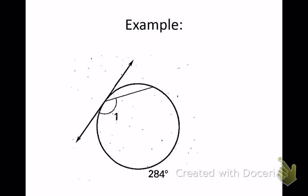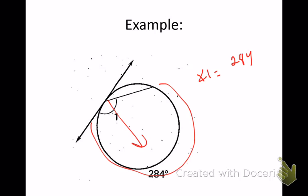So, something like this: if we have a tangent and a chord that are intersecting and we want to find angle one, it will be half the arc that it's looking at. It's looking at this arc right here, so angle one is simply 284 divided by 2, which gets you 142.